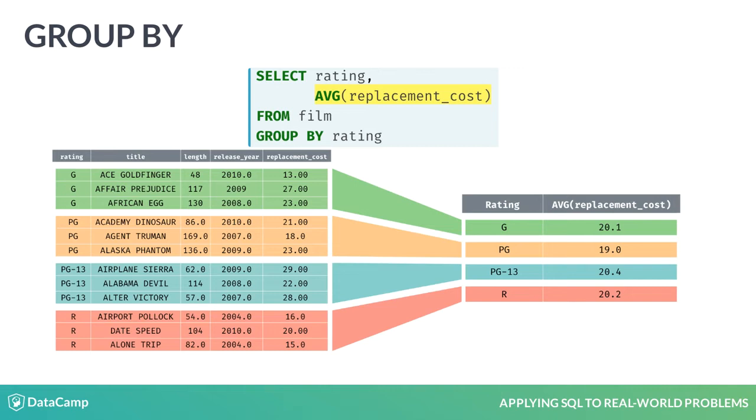Take a moment to review this visualization of the aggregate function in action. The way I like to think of it is that the GROUP BY function funnels all of the rows within each rating into the aggregate function, in this case the average. The result is an average of the column of choice for the respective rows. I hope that the image shown here will help you build an intuition for how aggregate functions work.